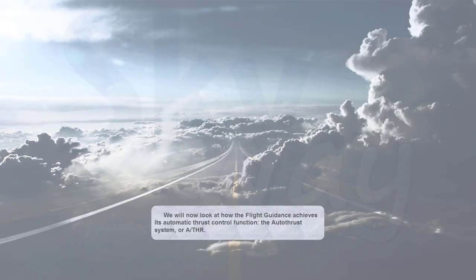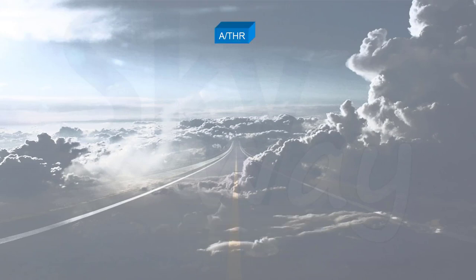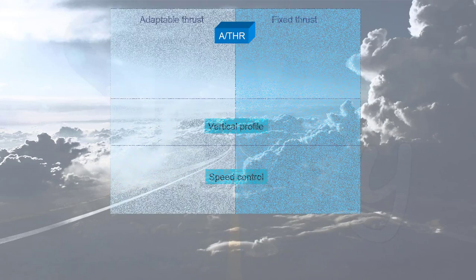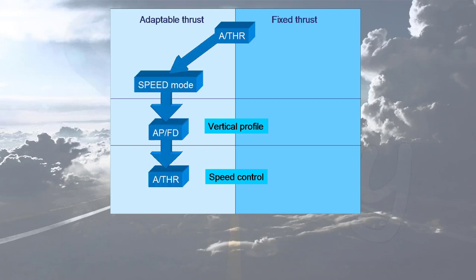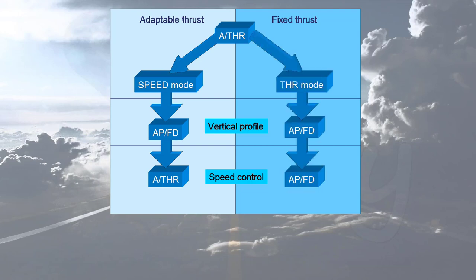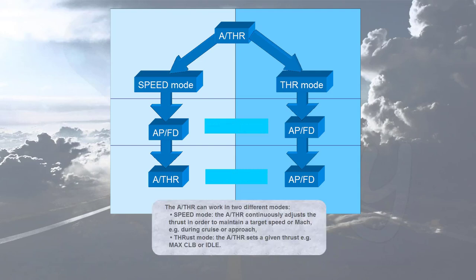We will now look at how the flight guidance achieves its automatic thrust control function. The auto thrust system, or auto thrust, can work in two different modes. In speed mode, the auto thrust continuously adjusts the thrust in order to maintain a target speed or Mach, e.g. during cruise or approach. In thrust mode, the auto thrust sets a given thrust, e.g. max climb or idle.